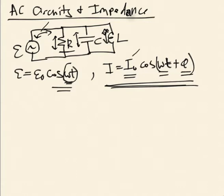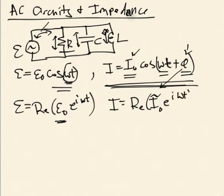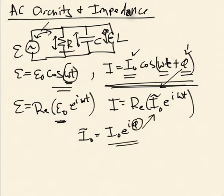I know the solution is going to look like this. My task is solving for I-naught and phi. The easiest way is to represent these solutions as complex exponentials. The EMF is the real part of E-naught times e to the i omega t. The current I is the real part of the peak current I-naught-tilde times e to the i omega t, where I-naught-tilde is a complex number. Any complex number can be written as an amplitude times e to the i phi, so the phase factor phi is buried inside that complex number I-naught-tilde.